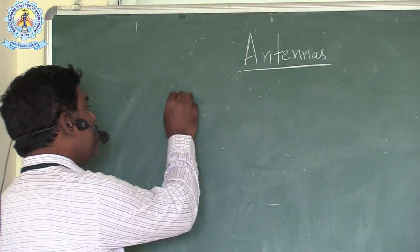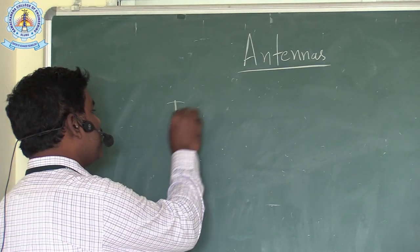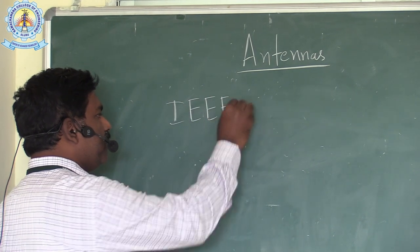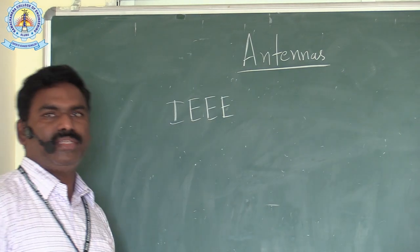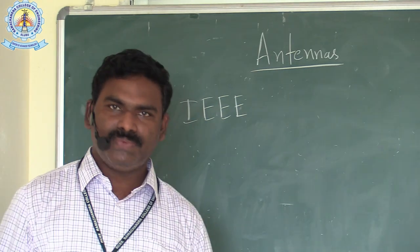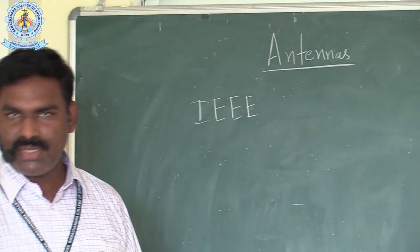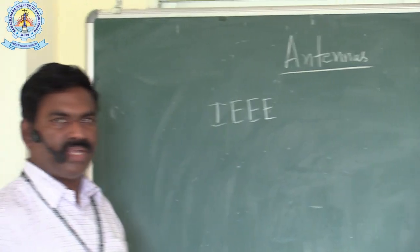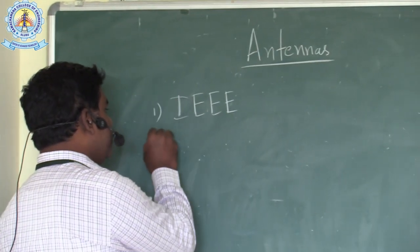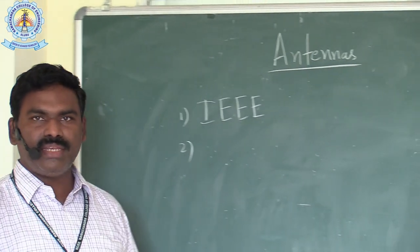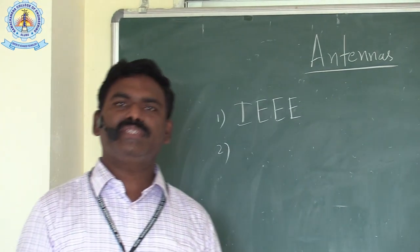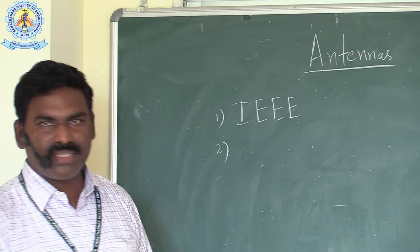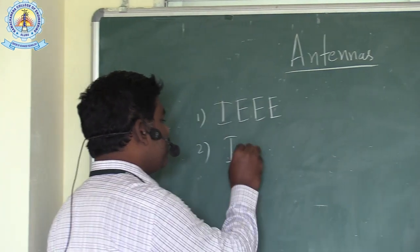Now coming to the definition of antenna: according to IEEE, an antenna is defined as a device which radiates or receives. An antenna can also be defined as a device which is acting as an impedance matching device.